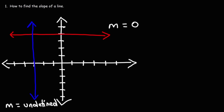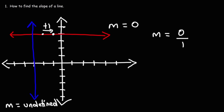Let's talk about why that's the case. Using rise over run on the horizontal line: to go from the first point to the second, you're not going up or down — there is no rise, so the rise is zero. The run can vary — it could be one, two, three, four, or five — but zero divided by any number is always zero.